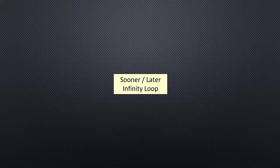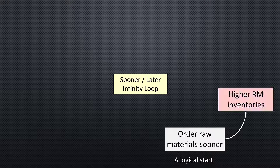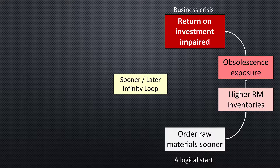This is the third problem purchasing agents face. I'll stop here on the poor buyers. Order raw materials sooner, but this gives you higher raw materials inventories. Obsolescence exposure is a natural consequence, so return on investment is impaired — a business problem.